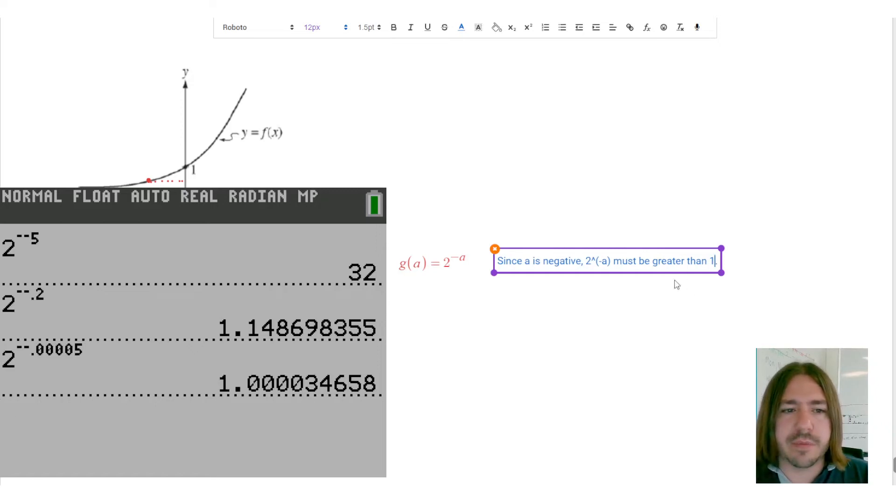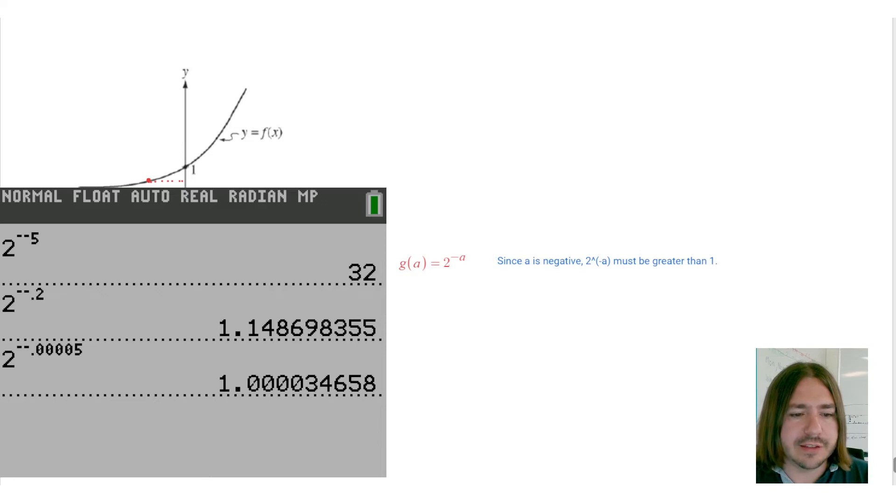Okay, so this has got to be bigger than 1, and since f of a is smaller than 1, that means g of a, in this case, is going to have to be bigger. Okay, so f of a is the smaller one, so we're going to say f of a is less than g of a. Now let's look at b.